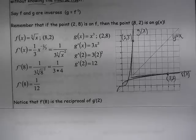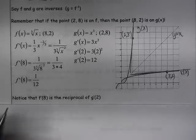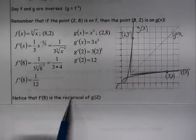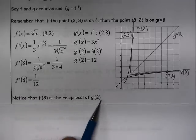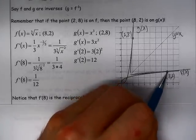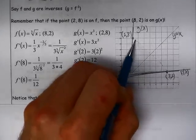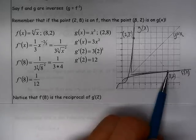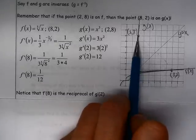So really what I'm trying to show you here in this example is just that f prime of eight is the reciprocal of g prime of two. So if we think about this as this point reflected across here gives us that point, and the slope at this point on f is the reciprocal of the slope of the function.